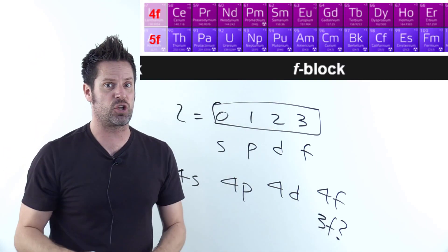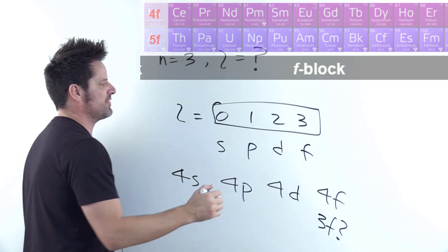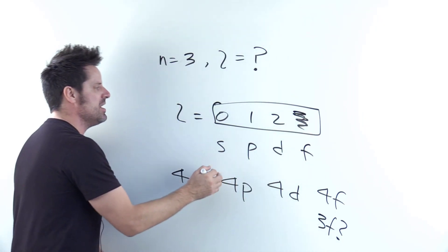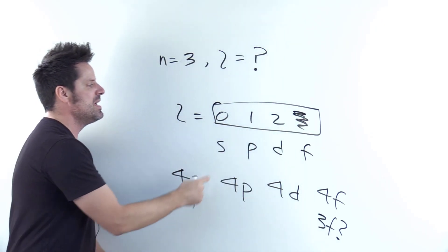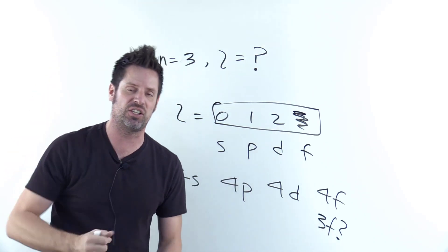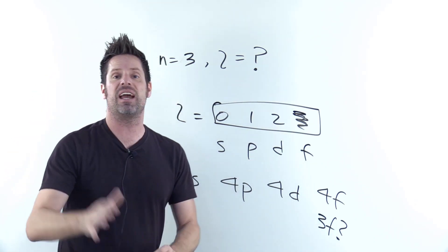The answer, as you can see in this chart, is no. There's no such thing as a 3f, so you'd have to cross off the f thing right here. You could only have 0, 1, and 2, s, p, and d, because indeed there is such a thing as 3s, 3p, and 3d.